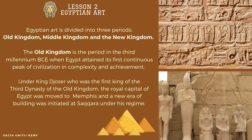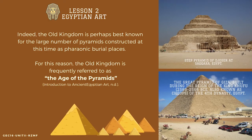Egyptian art is divided into three periods: Old Kingdom, Middle Kingdom, and New Kingdom. The Old Kingdom is the period in the 3rd millennium B.C.E. when Egypt attained its first continuous peak of civilization, complexity, and achievement. Under King Djoser, the first king of the 3rd dynasty, the royal capital was moved to Memphis and a new era of building was initiated at Saqqara. The Old Kingdom is frequently referred to as the Age of the Pyramids.